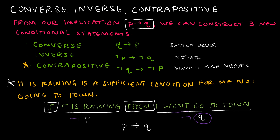The contrapositive is 'if not q then not p': if I go to town, then it is not raining. One important thing to note — marked with a star — is that the contrapositive will always have the same truth value as the original 'if p then q.' It is the only one that is guaranteed to be logically equivalent to the original implication.